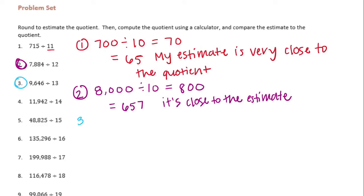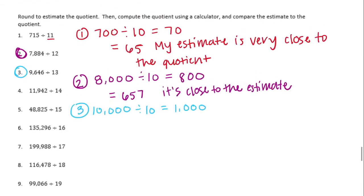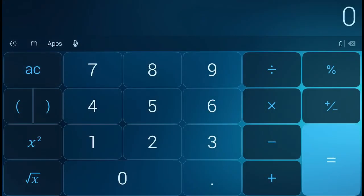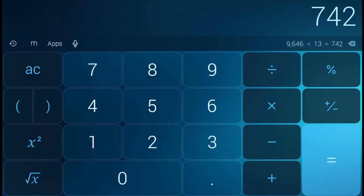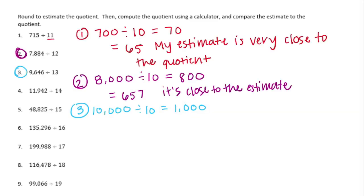Number 3: 9,646 divided by 13. I'm gonna round that to 10,000 divided by 10. So 10,000 divided by 10 would be 1,000 — that's my estimate. Now the actual division: 9,646 divided by 13 gives 742. And 742 is pretty close to 1,000, so I'm just gonna say it's close to the estimate.